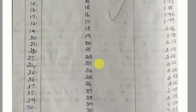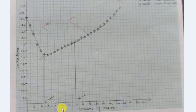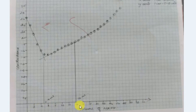The graph is flat in the middle region. On the x-axis we plot the volume of NaOH up to 30 ml, marked at 2, 4, 6, 8 ml intervals. The y-axis shows conductance, which is also noted as flat in the plateau region.